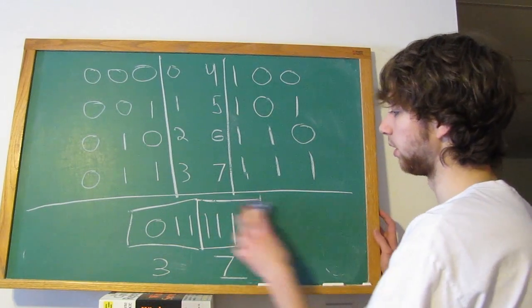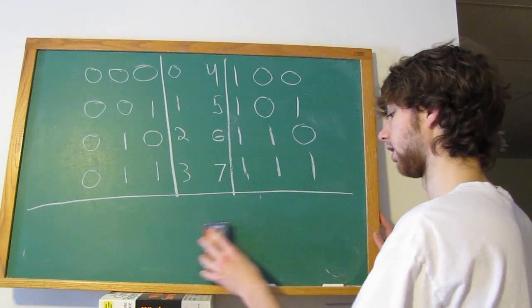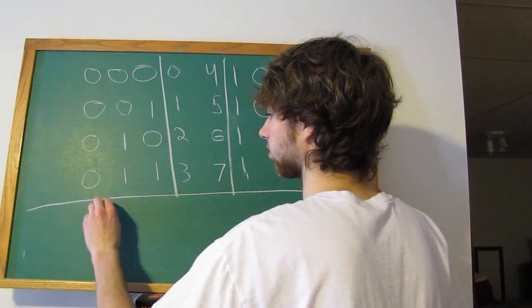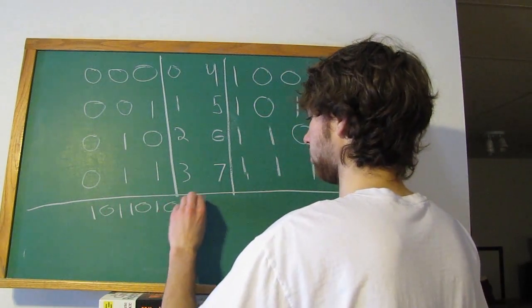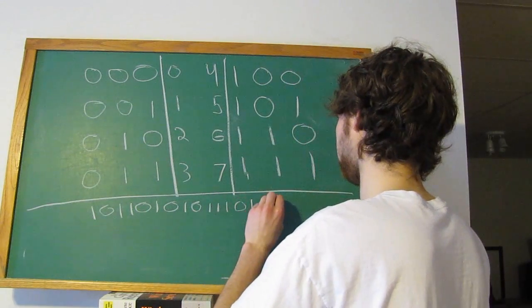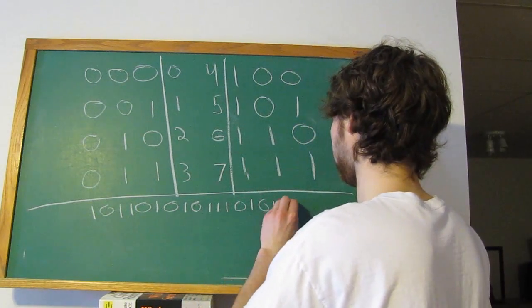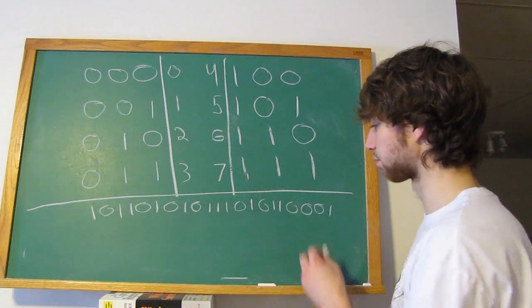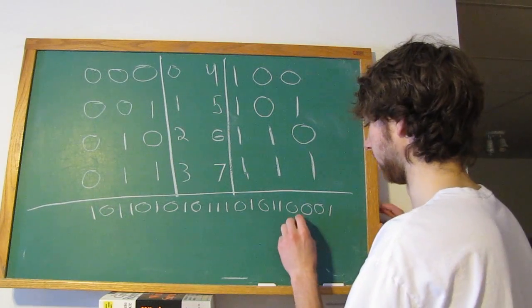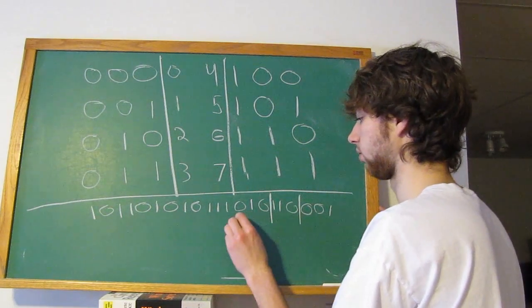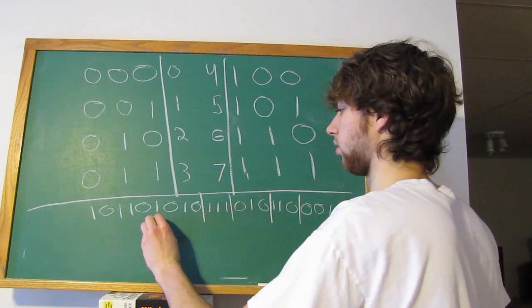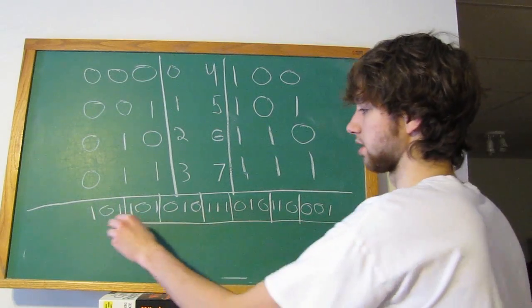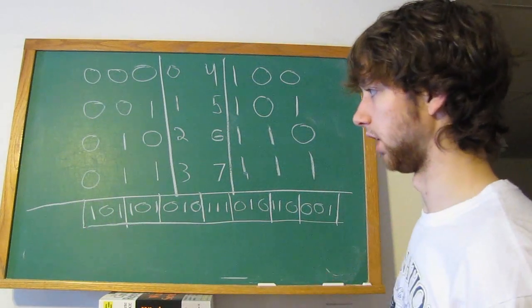So now we can practice this with a longer string of binary. So let's make it pretty long. So we have this huge strand of binary. And what we can do is first break this up into groups of 3. So now we have these nice, easy-to-read groups of 3.